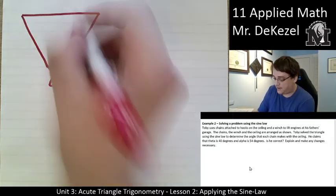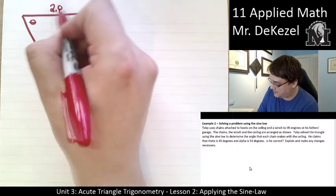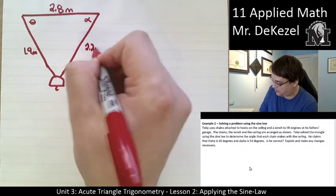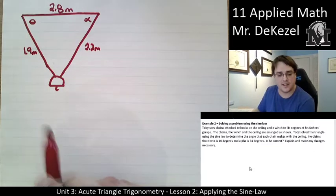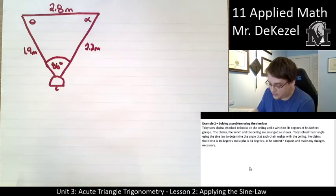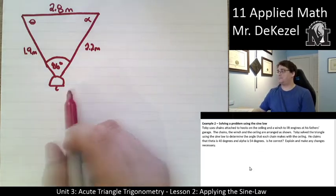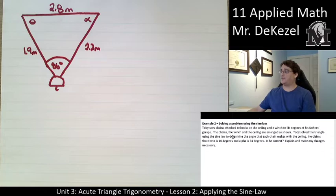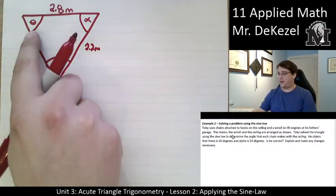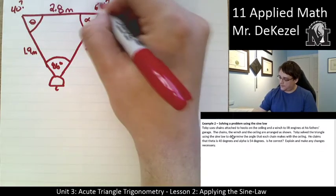So we have this. We labeled this as theta. We labeled this as alpha. We have the distance between them as 2.8 meters. We have our sides 1.9 meters and 2.2 meters. Not sure if it's wise to have it off balance like that. And then we have our one angle given down here. This is 86 degrees. So Toby has this set up. He solved the triangle using the sine law to determine these angles right here. He claimed that theta was 40 and alpha was 54. This is his claim.